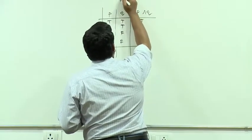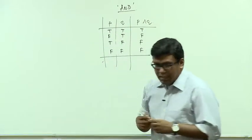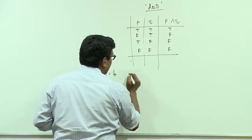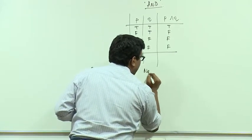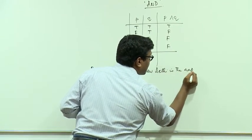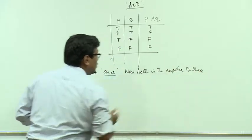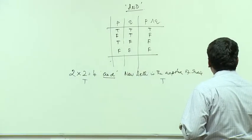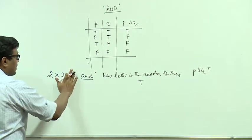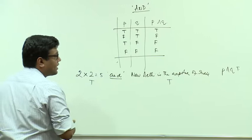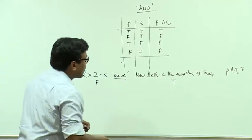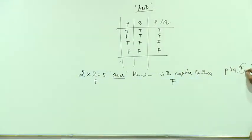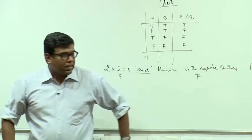Returning to the example: '2 × 2 = 4 and New Delhi is the capital of India' — the first statement is true and the second is true, so the conjunction P and Q is also a true statement. If we change it to '2 × 2 = 5 and New Delhi is the capital of India,' this would be false because the first part is false. And if we replace New Delhi by Mumbai, it would also be false. So finding the truth value of a conjunction is quite straightforward.